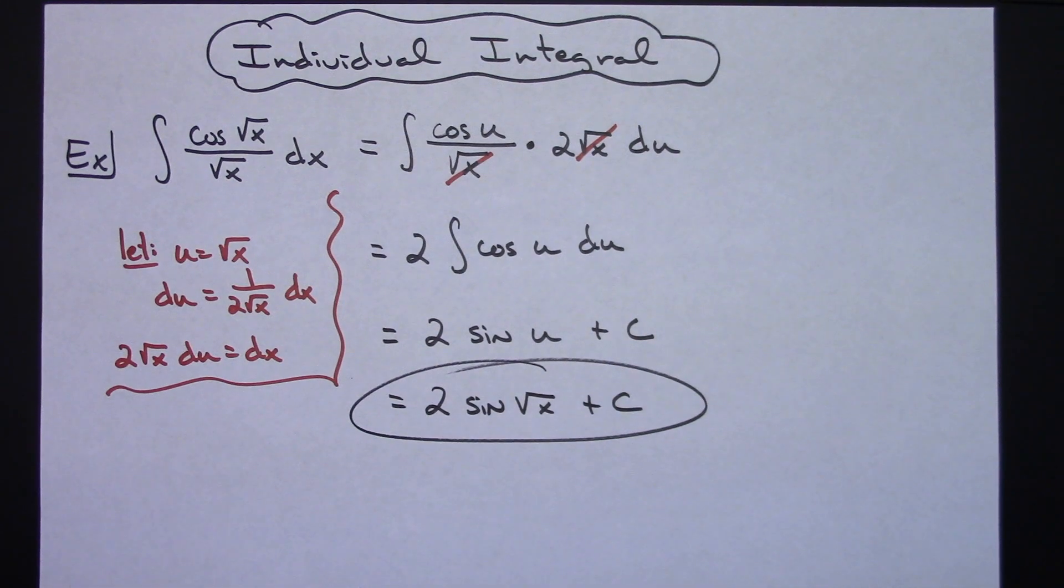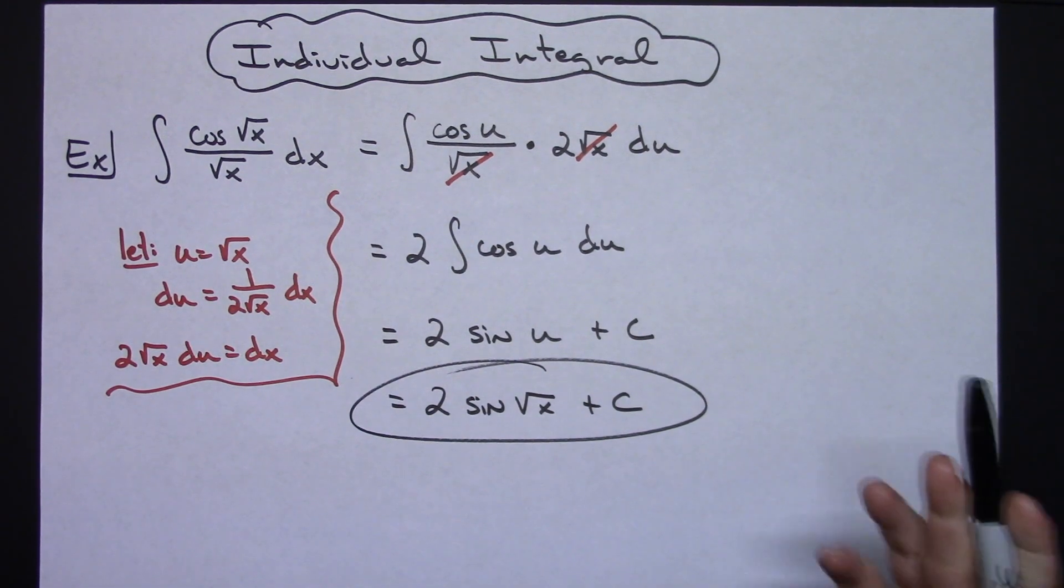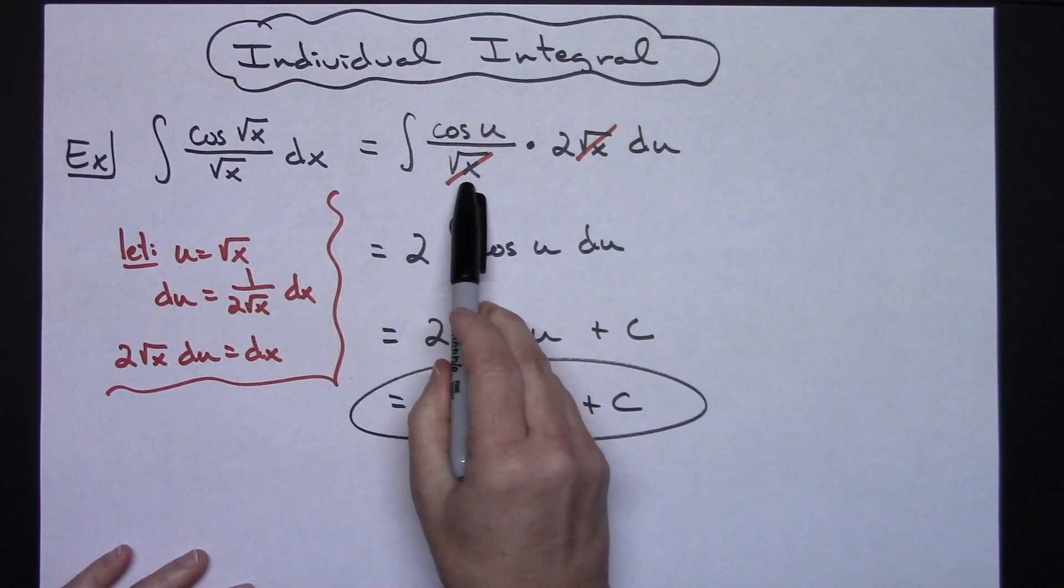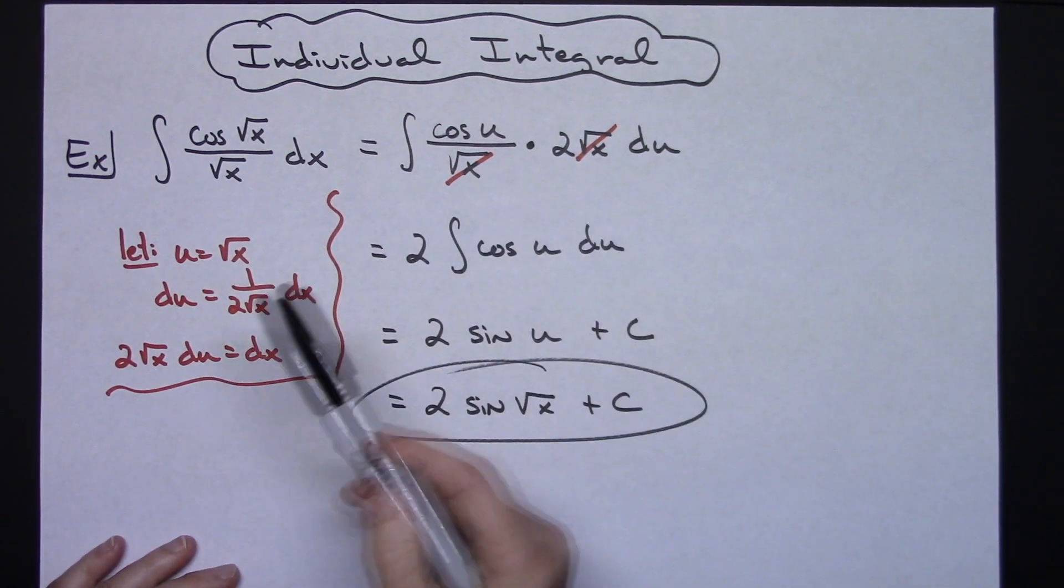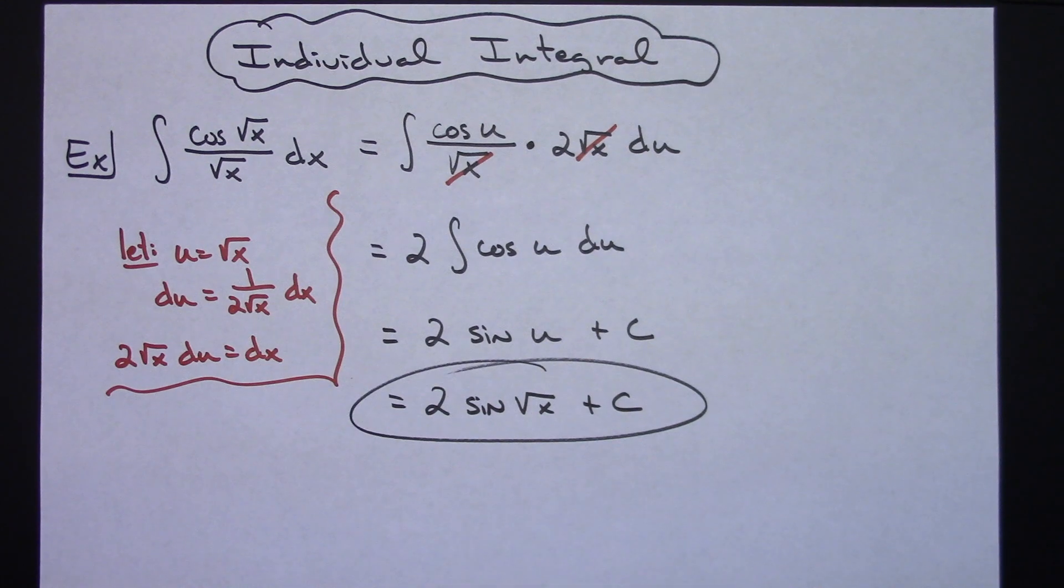So definitely just a straightforward u substitution there, and then making that decision whether you want to change everything to u or whether you just want to go ahead and leave those square root of x's. Either way they're going to cross out.